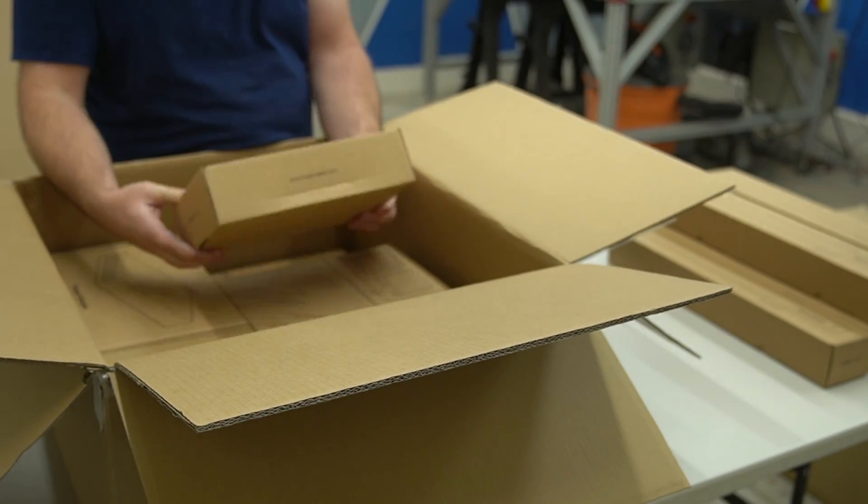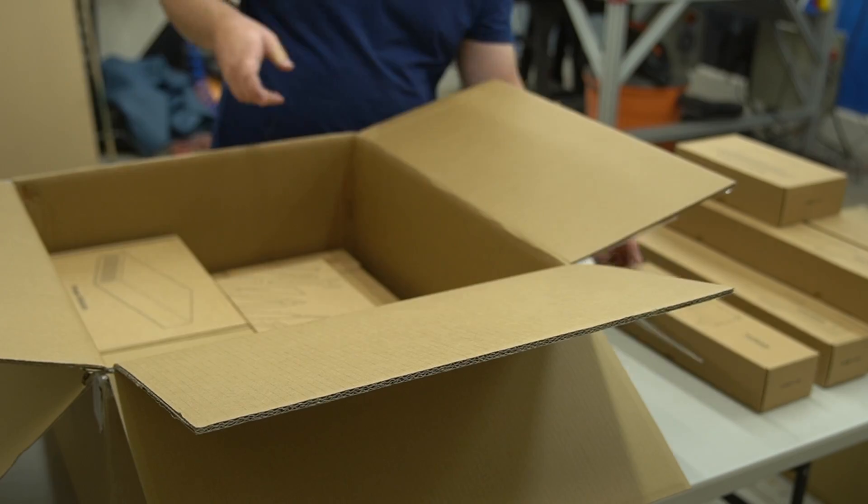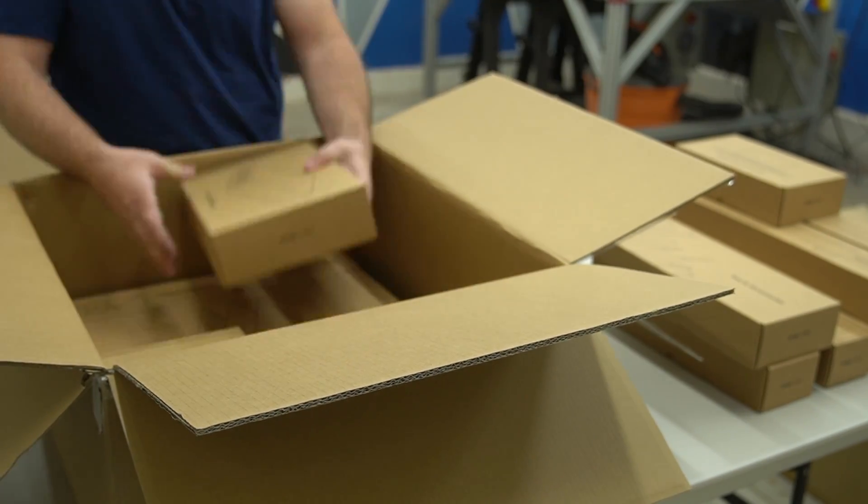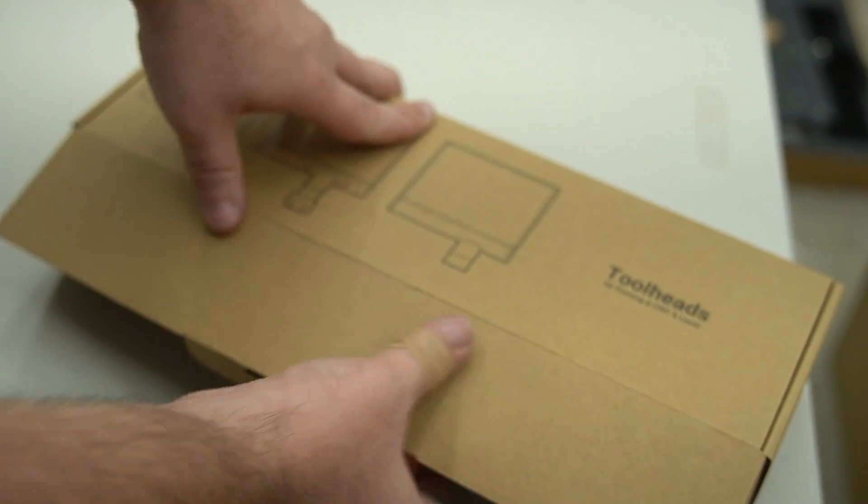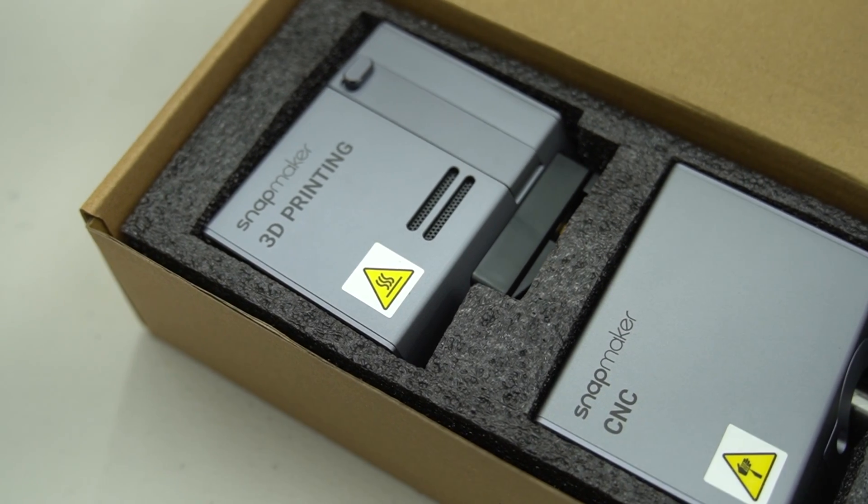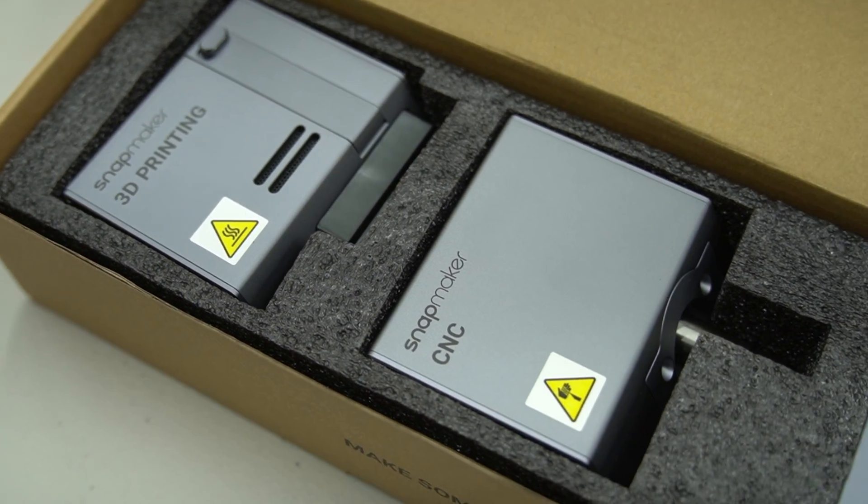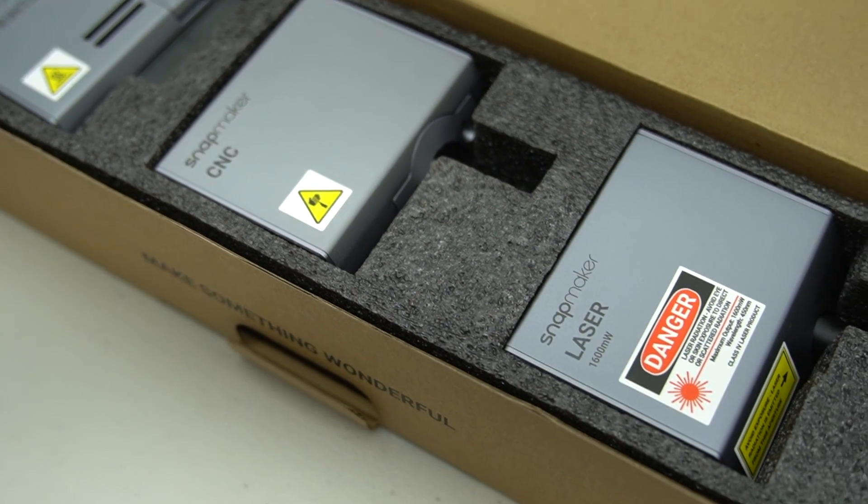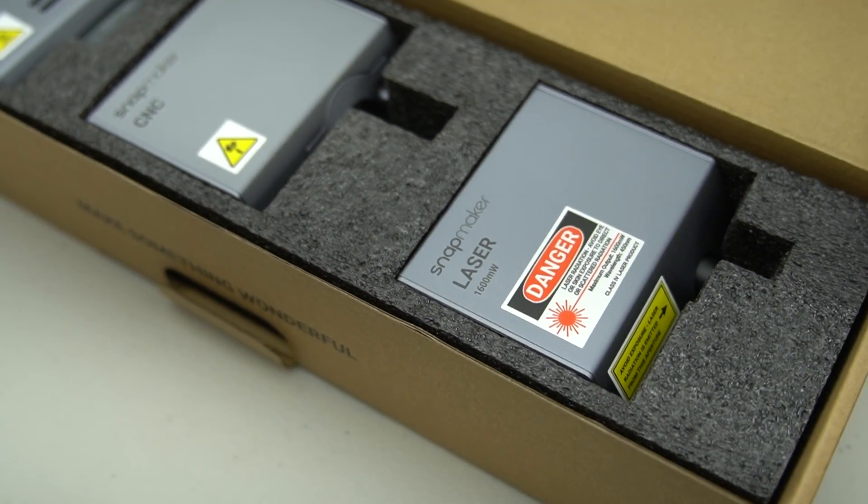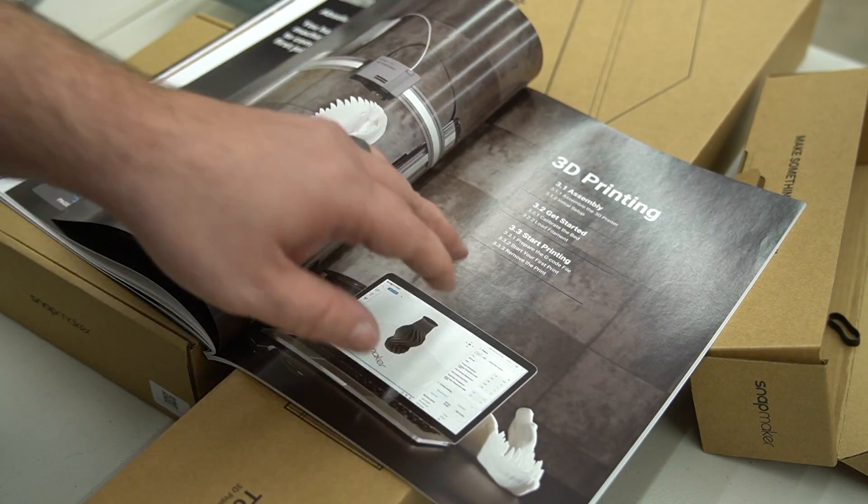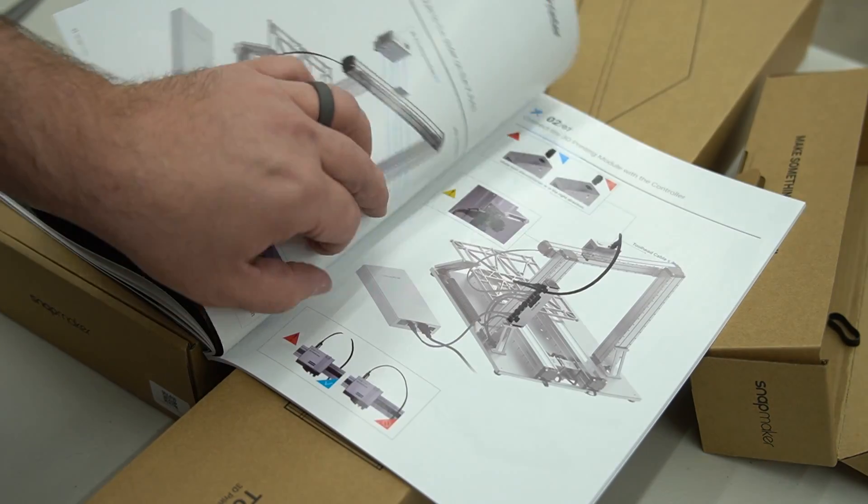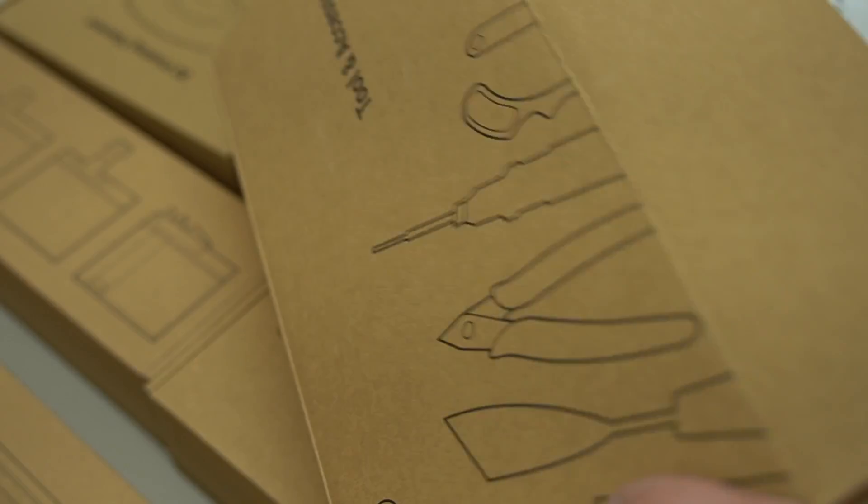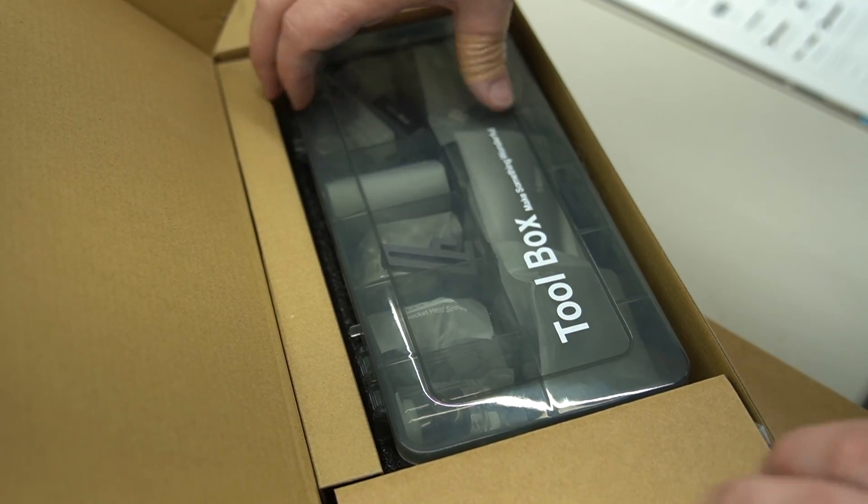So first up, let's get this thing unboxed. Everything is very well packed. It looks like we have the main components, the linear modules, 3D printing module, laser module, and the CNC module. It comes with a touchscreen, and then there's the different beds, the heated bed, the bed for the CNC router, and the bed for the laser. They've also included a very detailed user manual and all the tools to get it assembled.